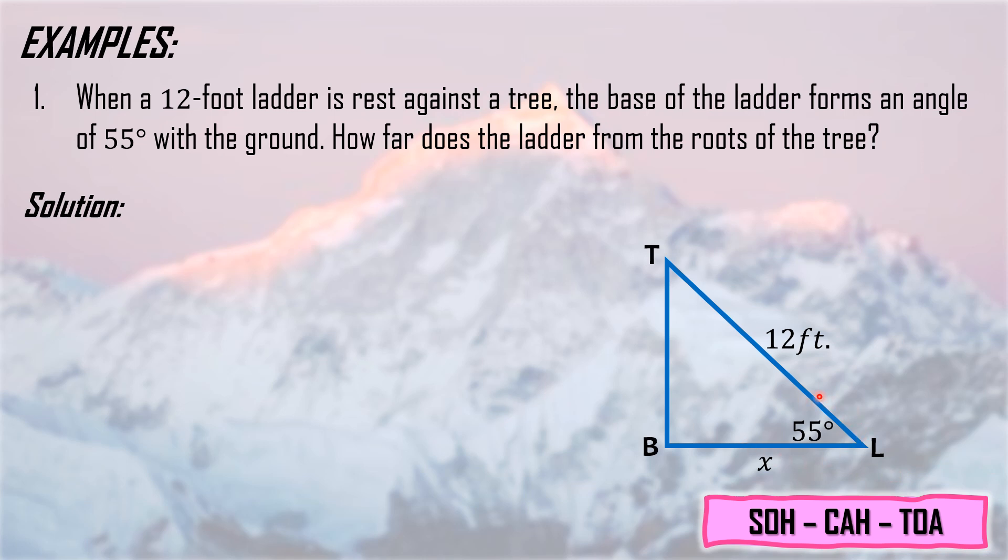We focus on the given angle which is 55 degrees. X is adjacent to it, and 12 feet is the hypotenuse. So we will use the formula for cosine. This will become cosine theta equals adjacent over hypotenuse. Substituting the given values: cosine 55 degrees equals X over 12 feet. We need to make cosine 55 degrees a fraction by adding denominator of 1. Since they are both fractions now, let's apply cross multiplication.